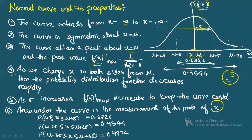For the probability intervals: P(μ − σ < x < μ + σ) = 0.6826; P(μ − 2σ < x < μ + 2σ) = 0.9544; P(μ − 3σ < x < μ + 3σ) = 0.9974. In percentage terms these are 68.26%, 95.44%, and 99.74% respectively.